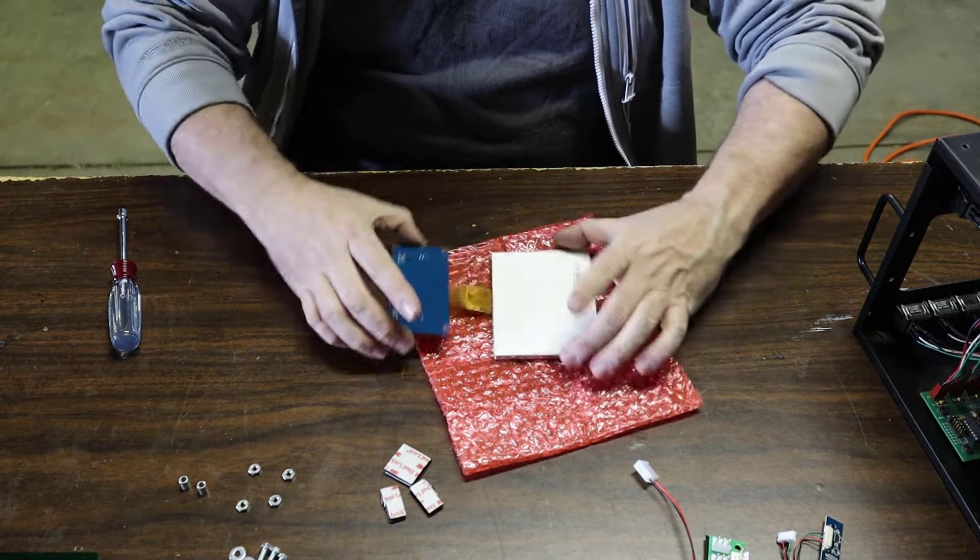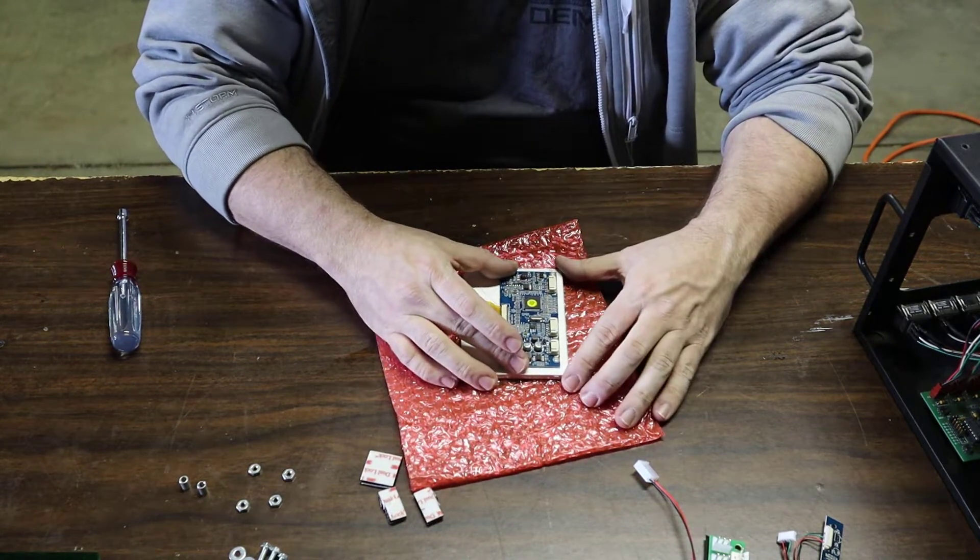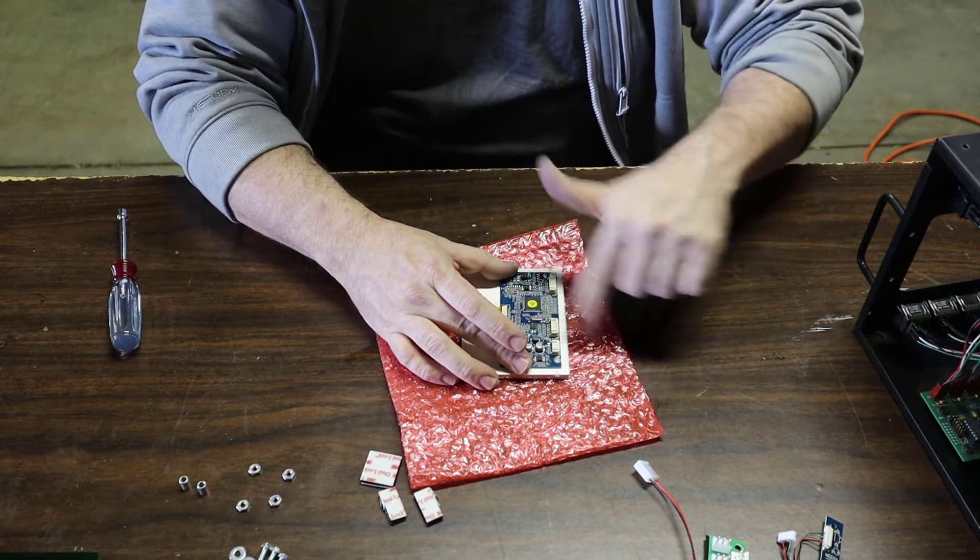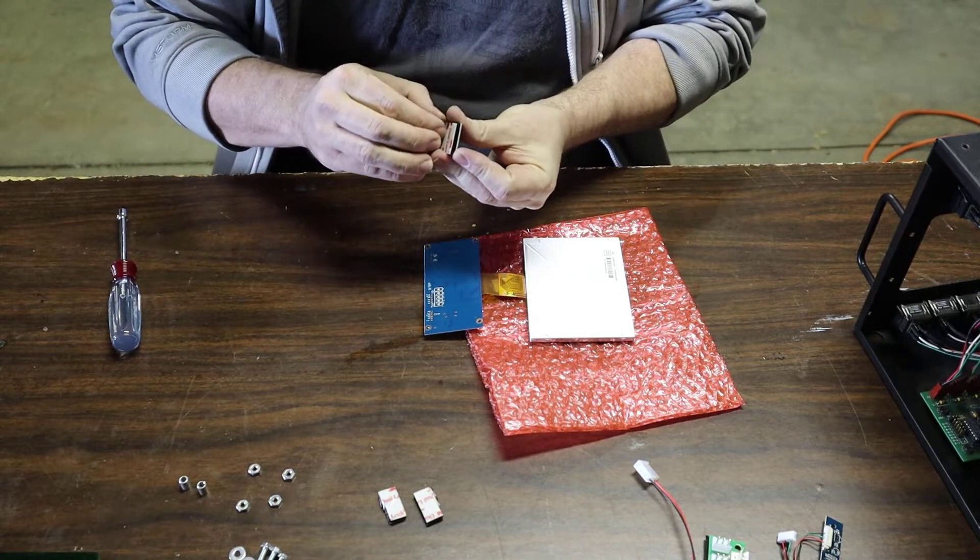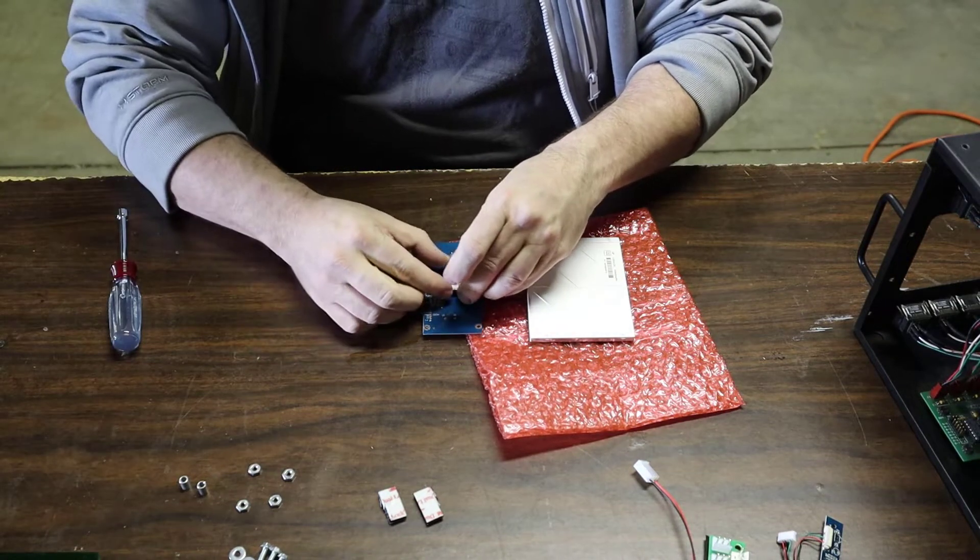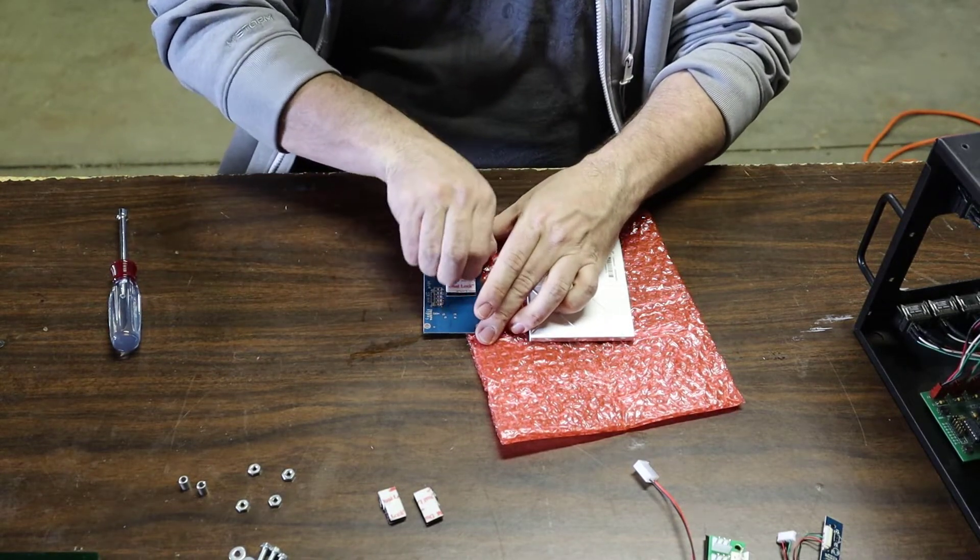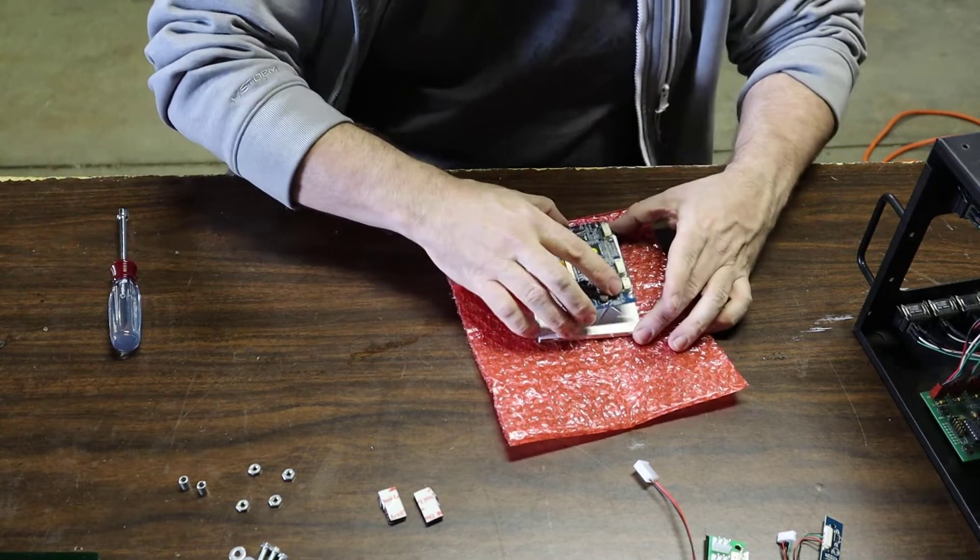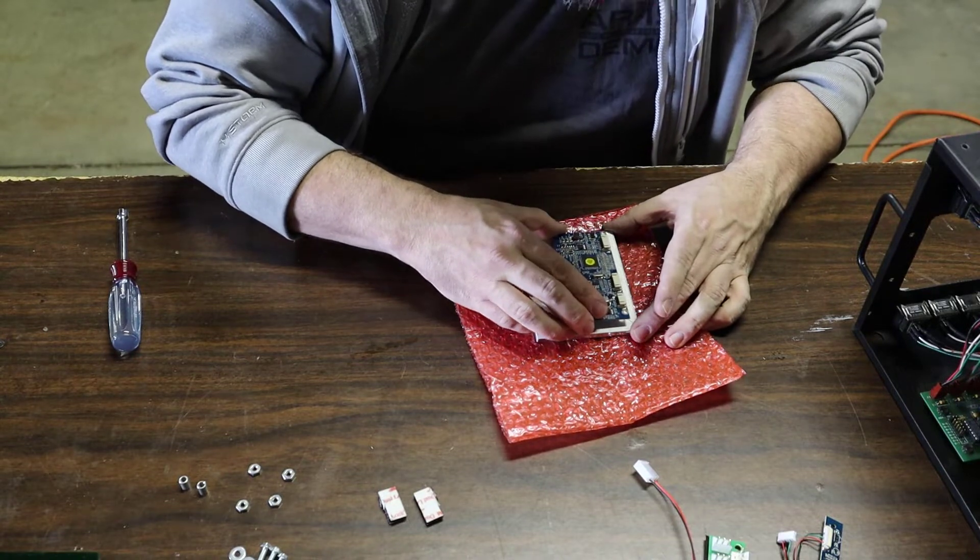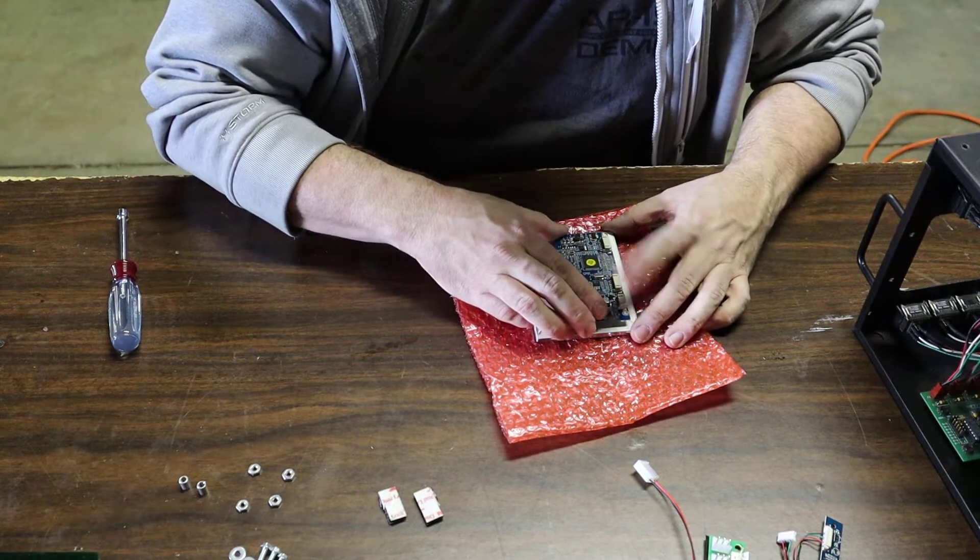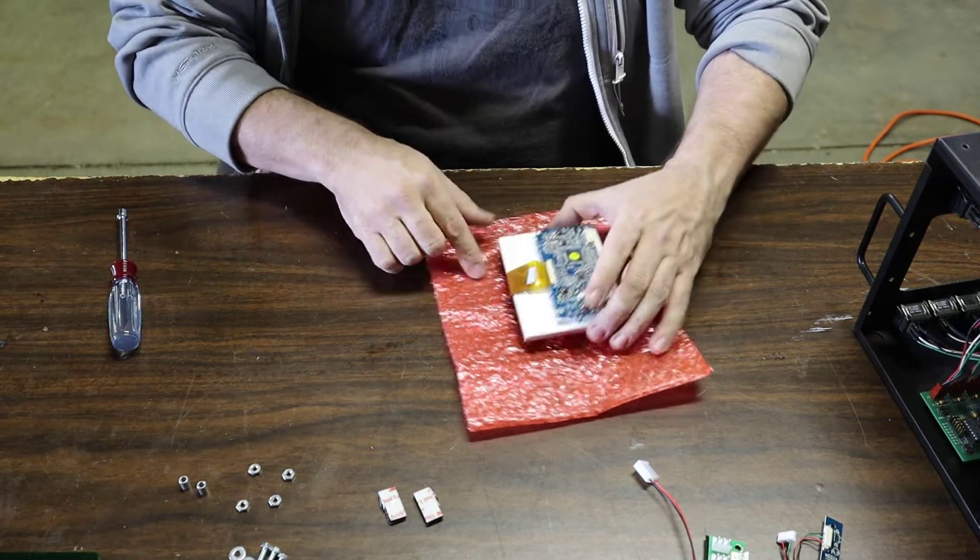We're going to flip this over. This board we are going to attach to the back, right about here. We're going to leave an even amount of space around the borderline. I'm going to take one of my pieces of double-sticky Velcro, stick it where it's not on any of the components. Try not to overstretch the ribbon cable. We want to get this as centered as possible. You can see our ribbon cable has a little bit of play to it, which is what you want.